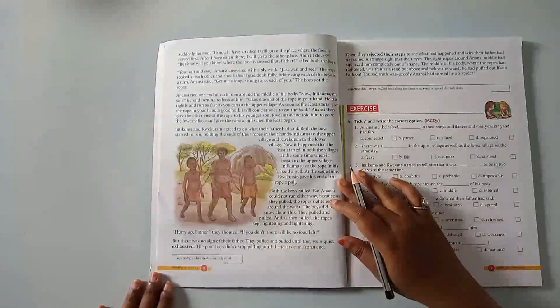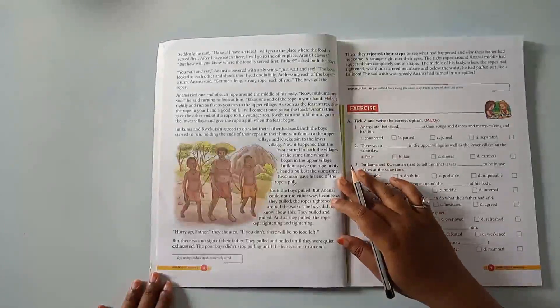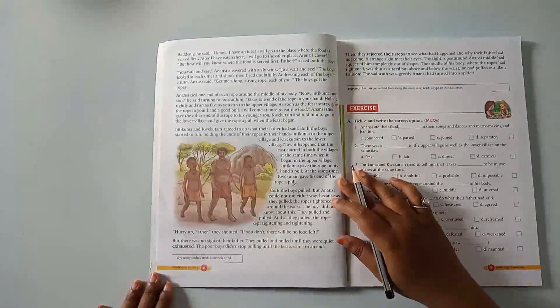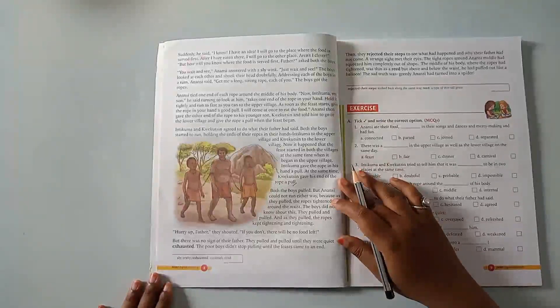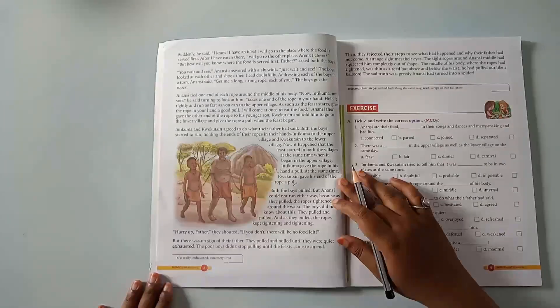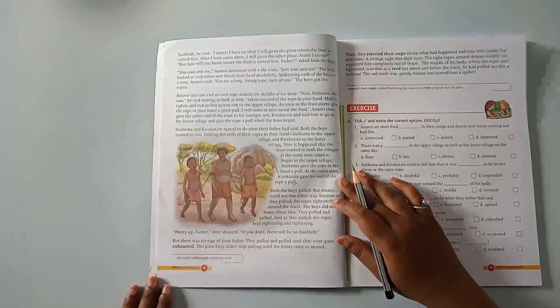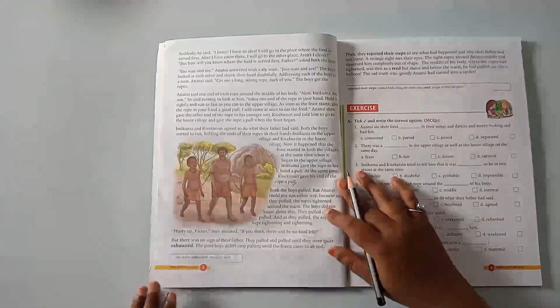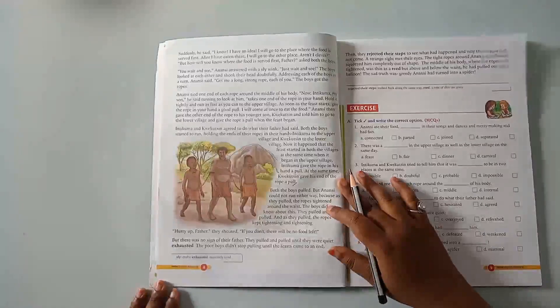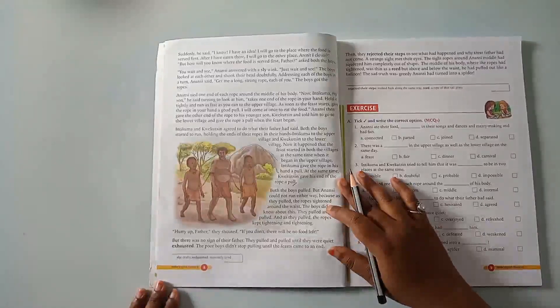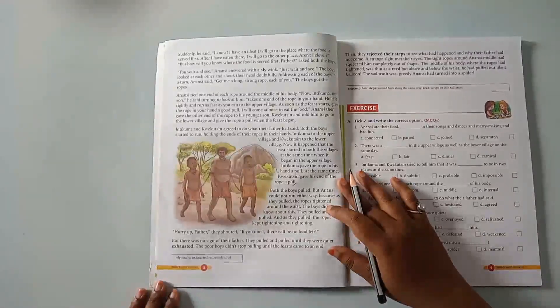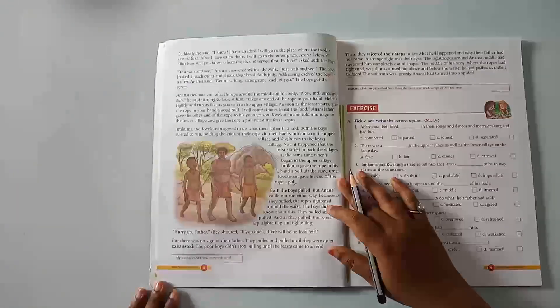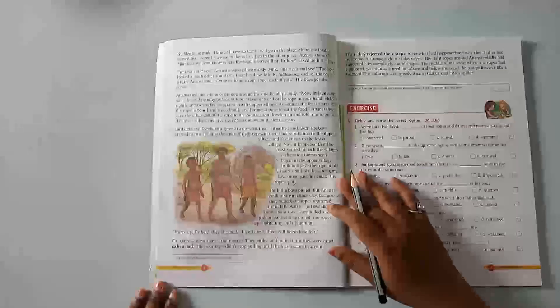Then they retraced their steps to see what had happened and why their father had not come. A strange sight met their eyes. The tight ropes around Anansi's middle had squeezed him completely out of shape. The middle of his body, where the ropes had tightened, was thin as a leaf. But above and below the waist, he had puffed out like a balloon. The sad truth was, greedy Anansi had turned into a spider.